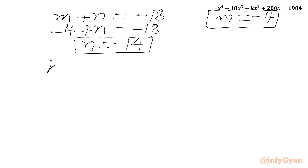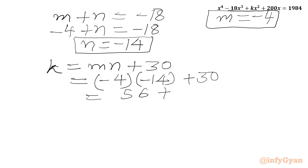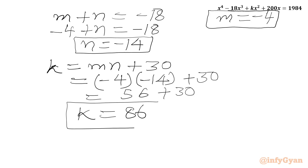Now we can easily find k. k equals mn plus 30. Putting in the values: m is minus 4, n is minus 14, so mn equals 56. Therefore k equals 56 plus 30, giving us k equals 86. This concludes Method 1.